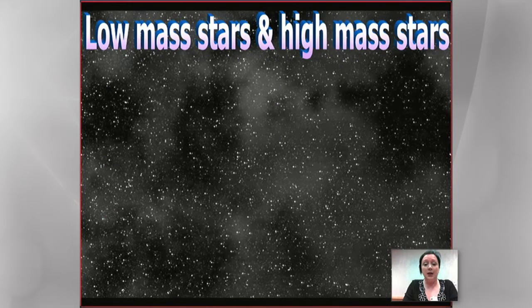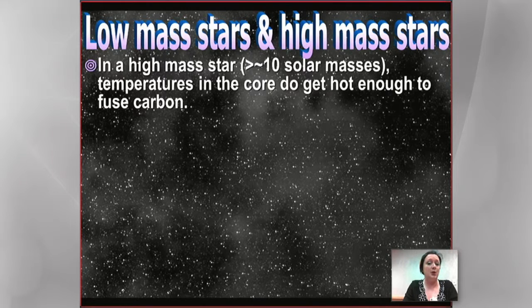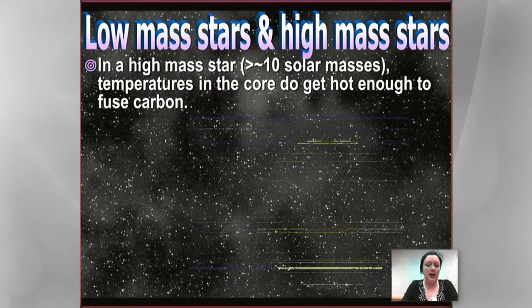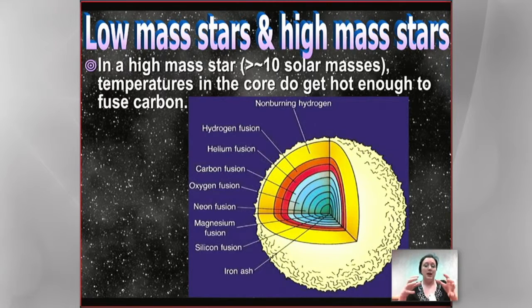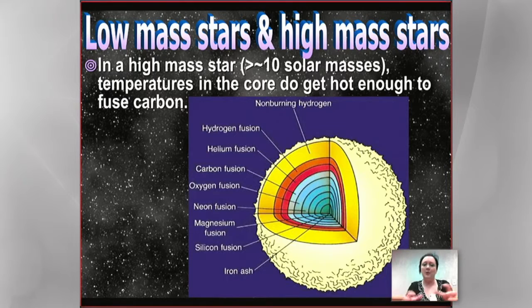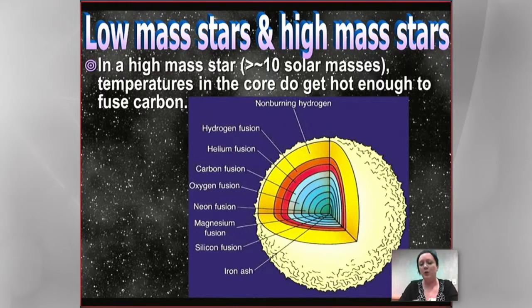If you've got a higher mass star, it can do more. It can get carbons and stick carbons together, making oxygens and other things. Then you stick oxygens together and make more things; stick neons together and make more. Basically, you can just keep fusing different elements up to making iron. Iron is only the 26th element, and we have a lot more elements than that. We can make up to iron just by sticking atoms together by fusion — getting them more and more tightly bound so you get energy out. But once you get to iron, you don't get energy out, so you can't make them the same way.